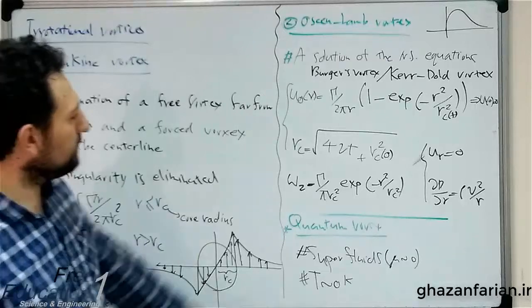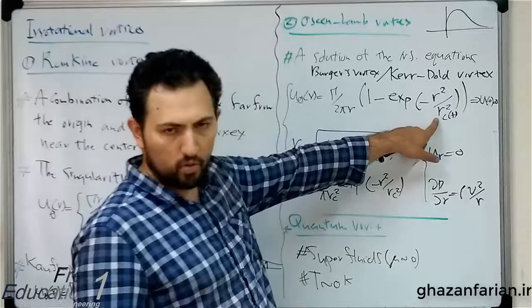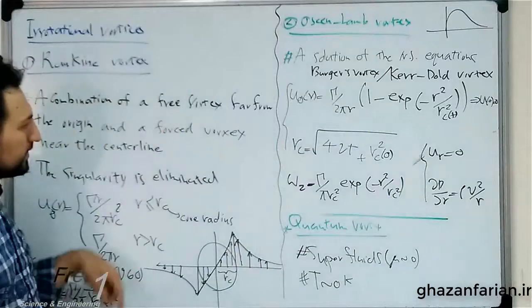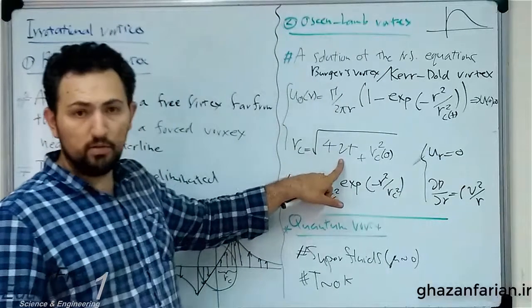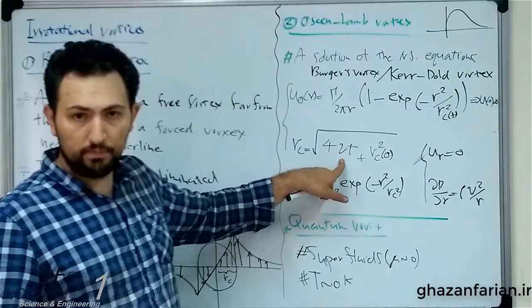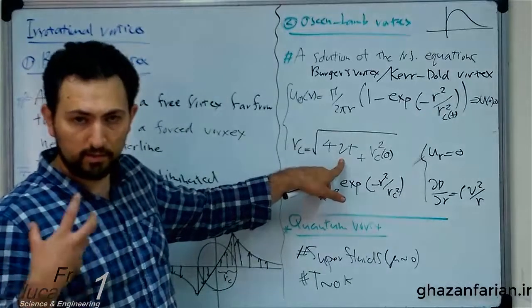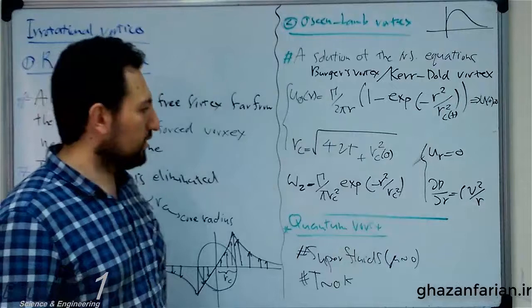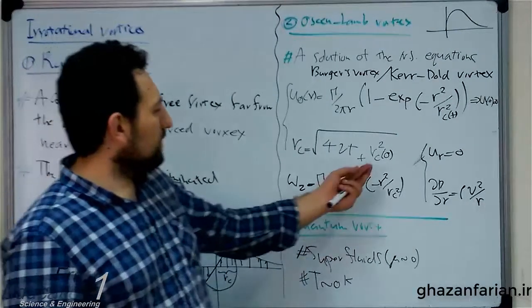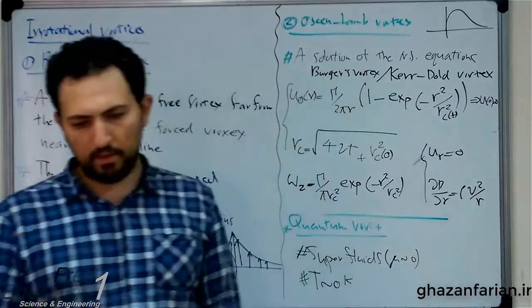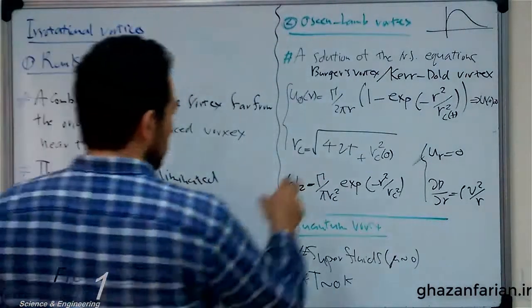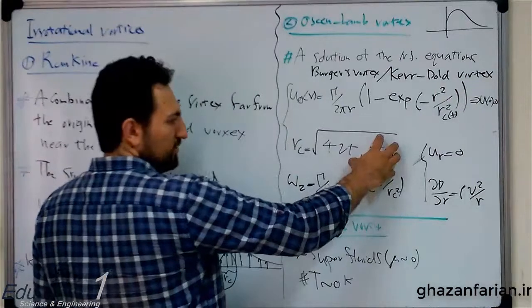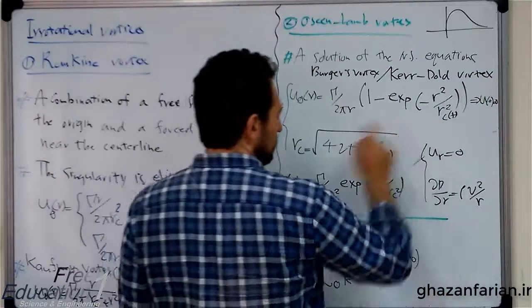We have the radius of core here, again similar to R sub c. Rc is a function of viscosity. Viscosity appears in the result of our solution, and this is the core radius at the initial time. If the core radius is zero, this part vanishes in this relation.